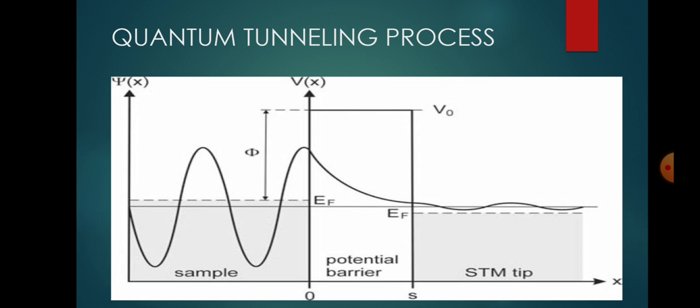Here we have drawn the one-dimensional potential barrier diagram. If we consider the transmission or tunneling coefficient of a particle through the barrier, in the classical case, the particle is always reflected if its energy is less than the potential barrier height qV₀.